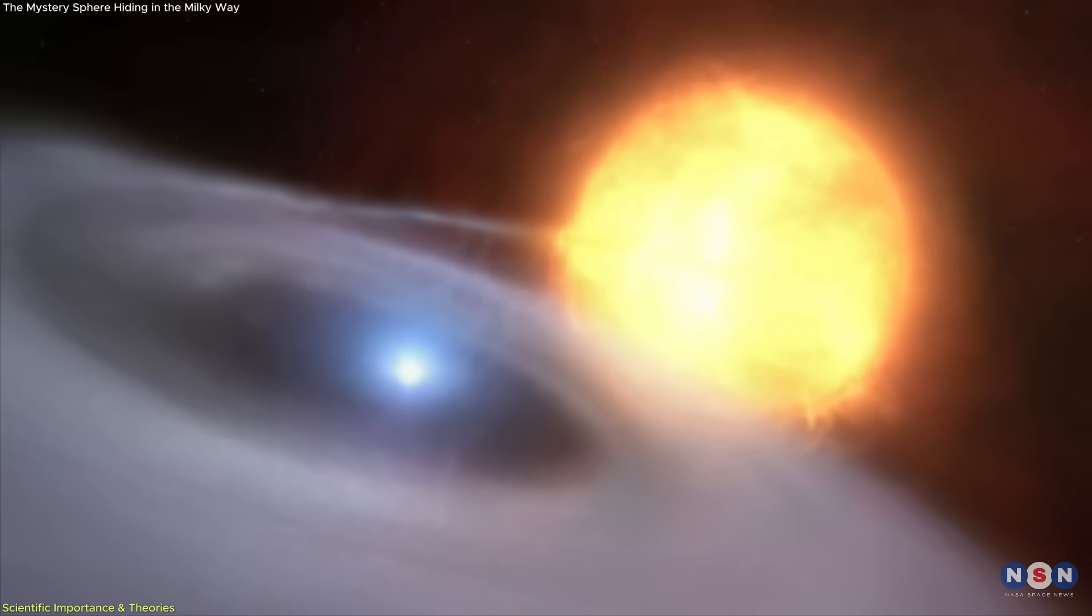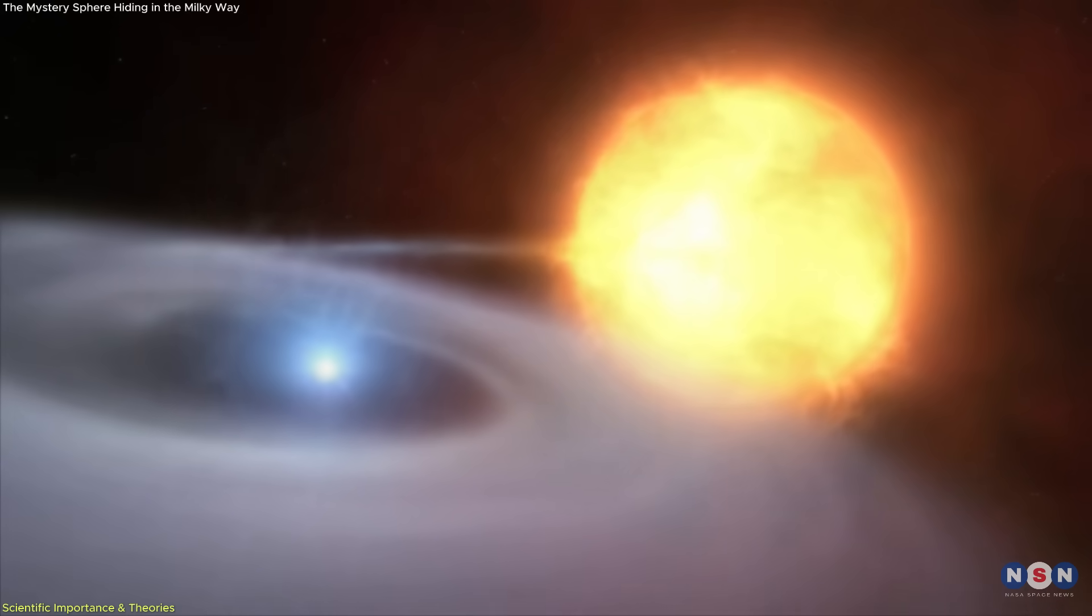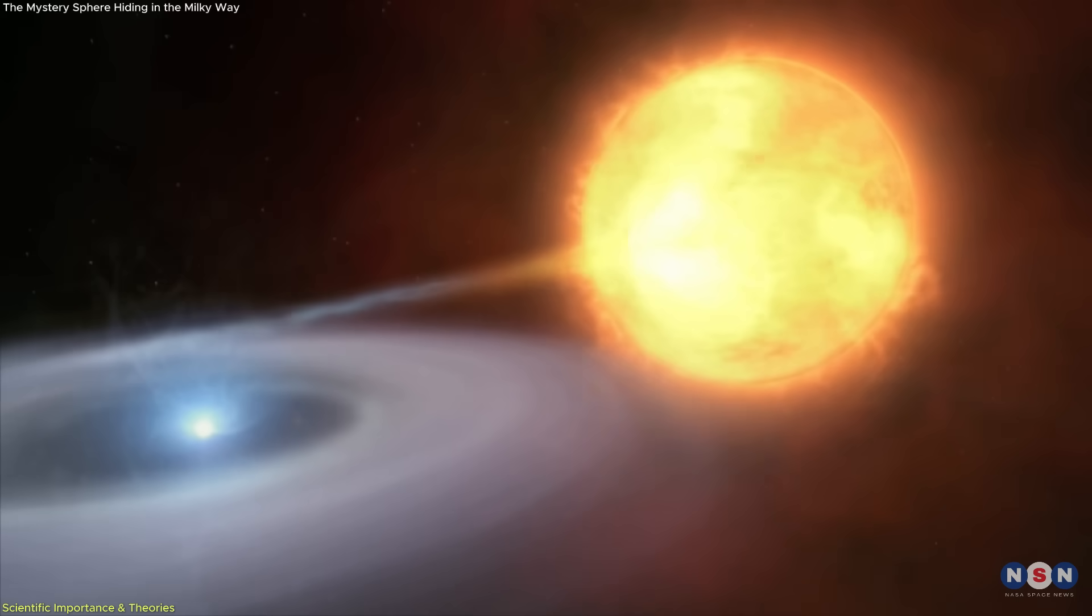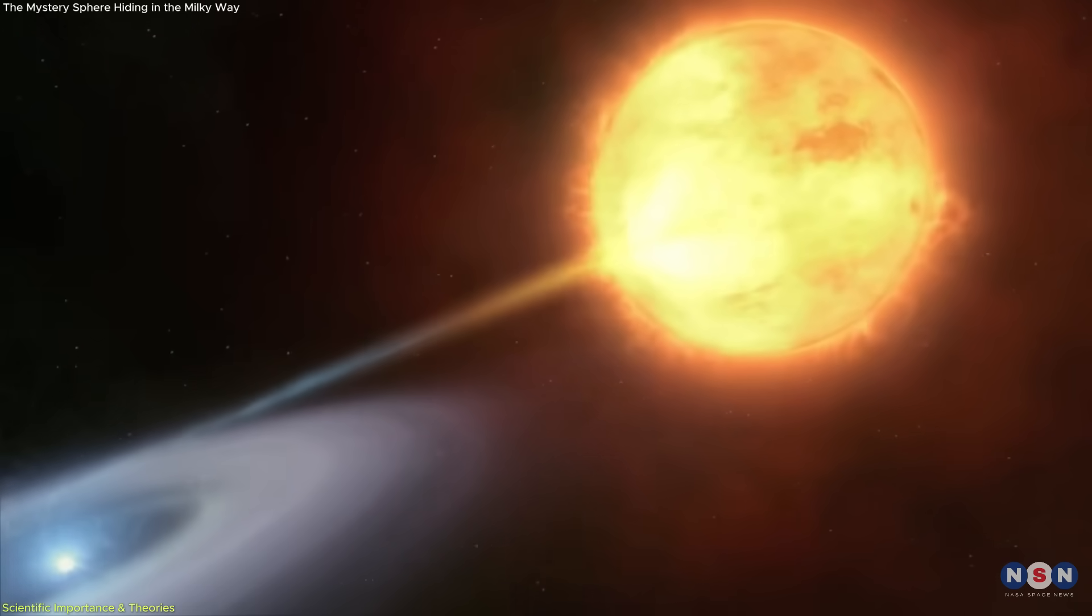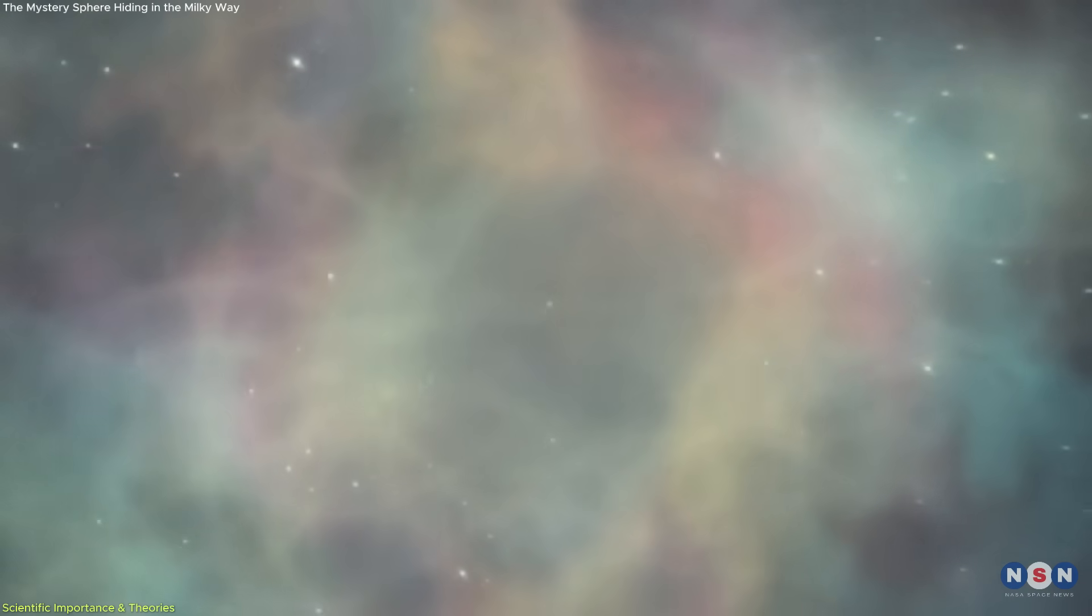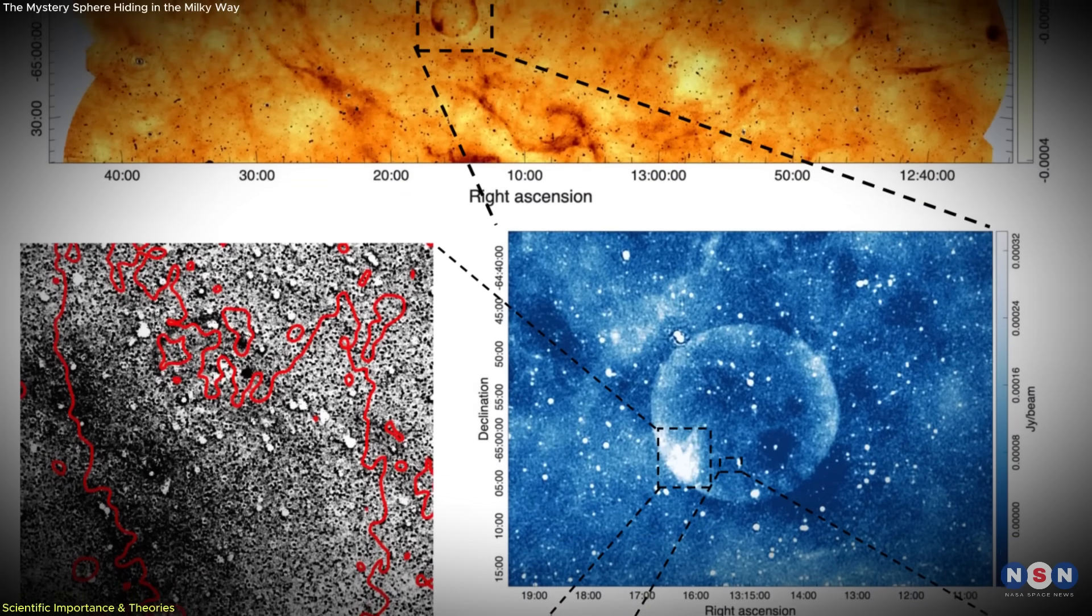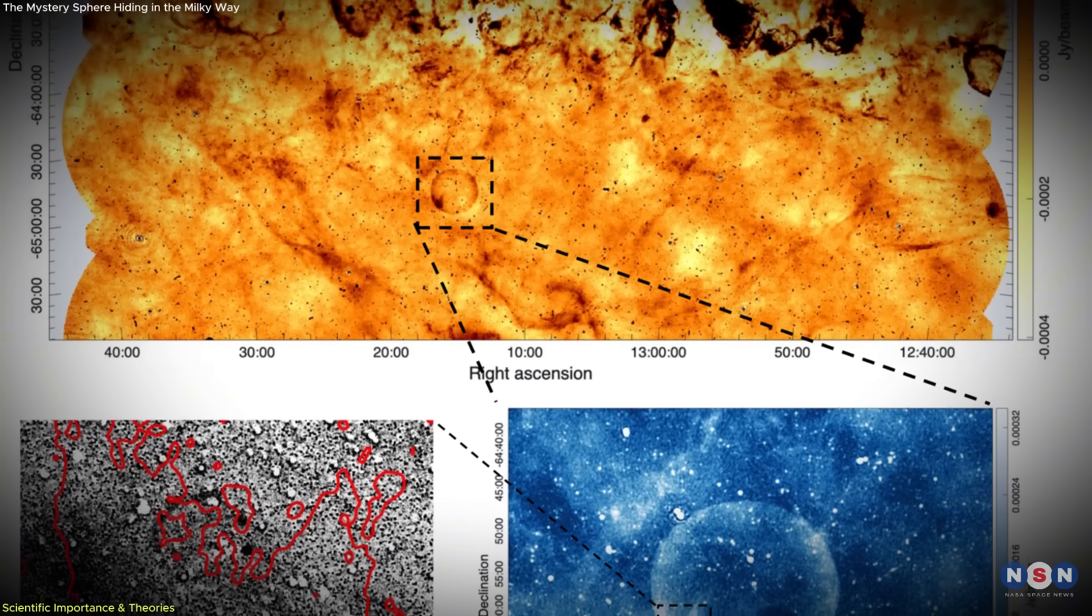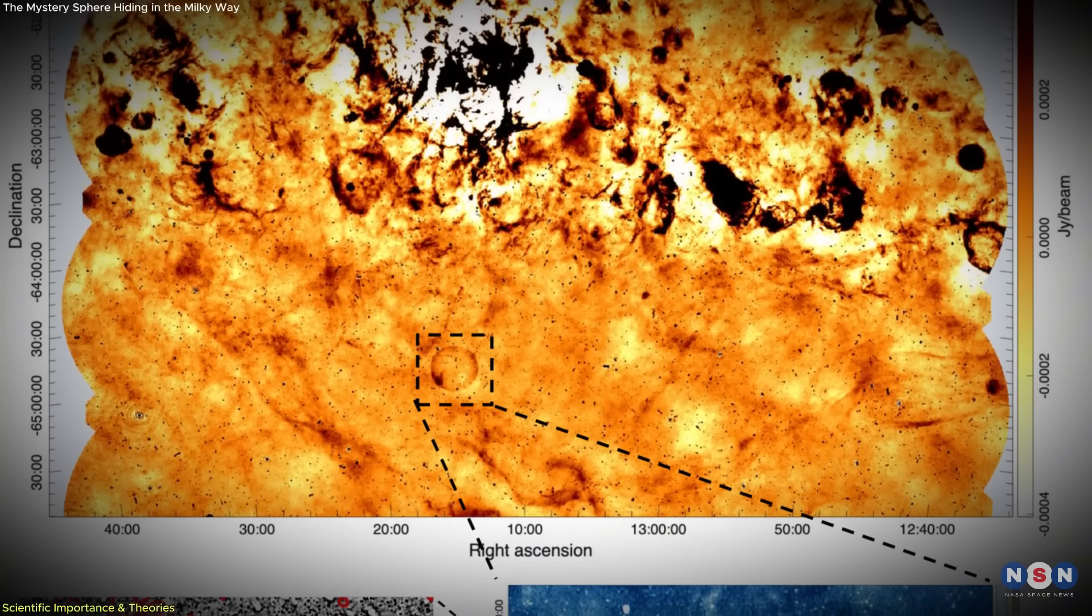Another possibility is a Type Iax supernova, a weaker version of the Type Ia that may leave behind a zombie star, a partially exploded white dwarf that continues to smolder. But if that were the case, Teleos would need to be far closer than current distance estimates suggest. The data doesn't quite add up.